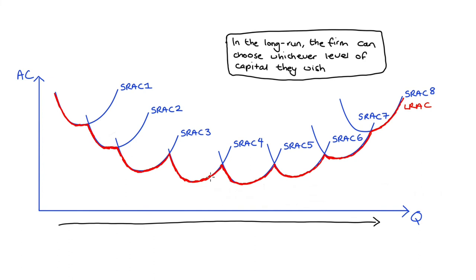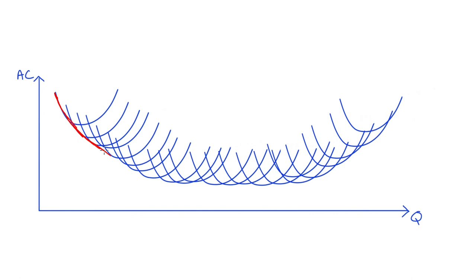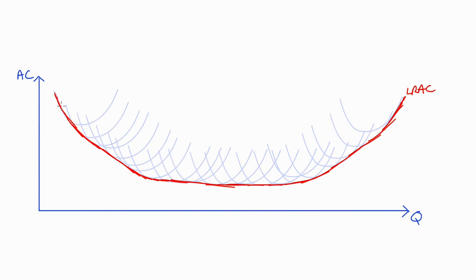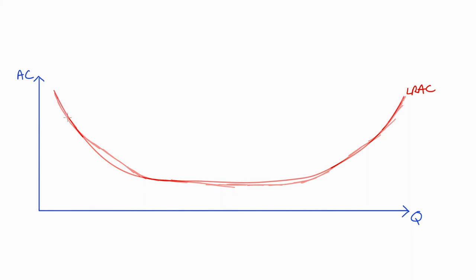As drawn with only eight short-run average cost curves, the long-run average cost curve looks a bit wavy. But if we recognize that the firm can choose many, many different levels of capital, there would be many more short-run average cost curves filling the diagram. Taking the lower envelope of this multitude of curves, the line becomes quite smooth. At the limit, considering all possible short-run average cost curves, you get the smooth U-shaped long-run average cost curve that is probably familiar from your textbooks.